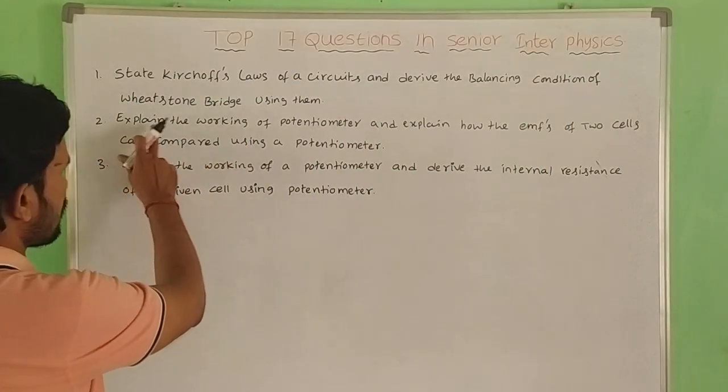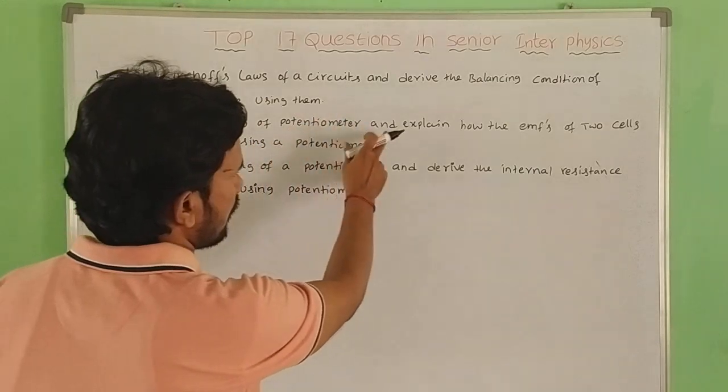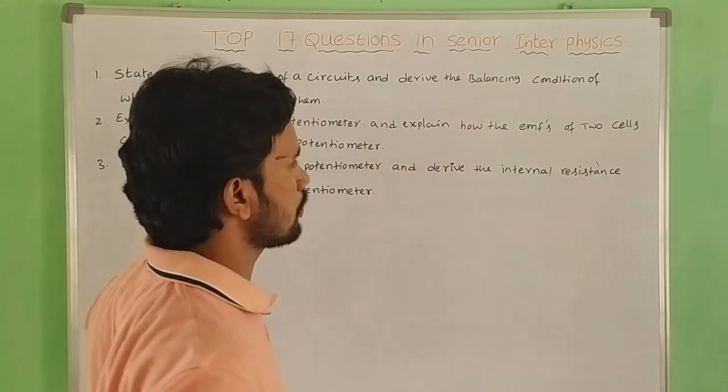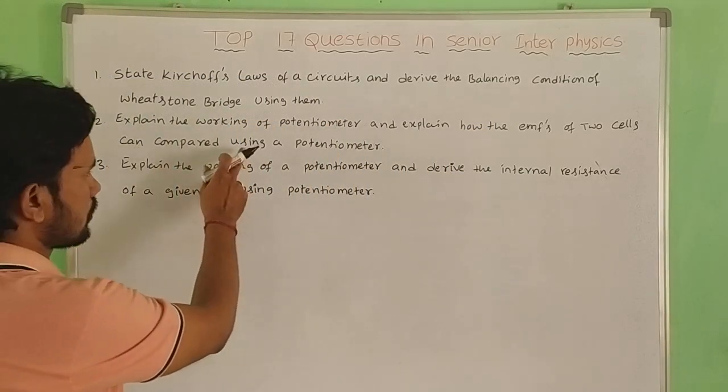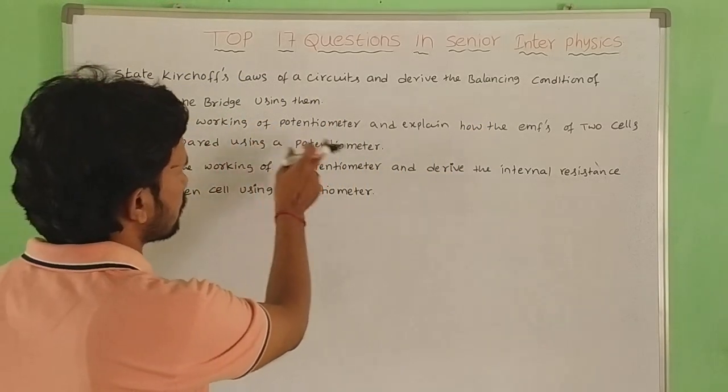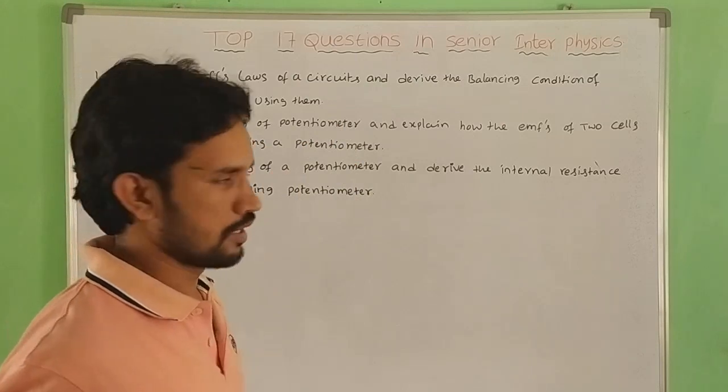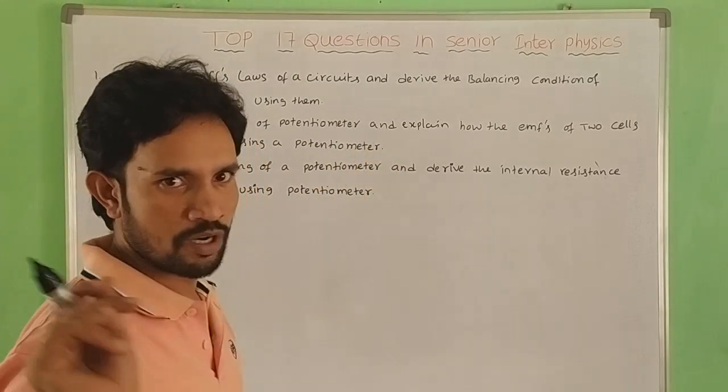Second question: Explain the working of potentiometer and explain how the EMFs of two cells can be compared using a potentiometer. This is the second question, eight marks.